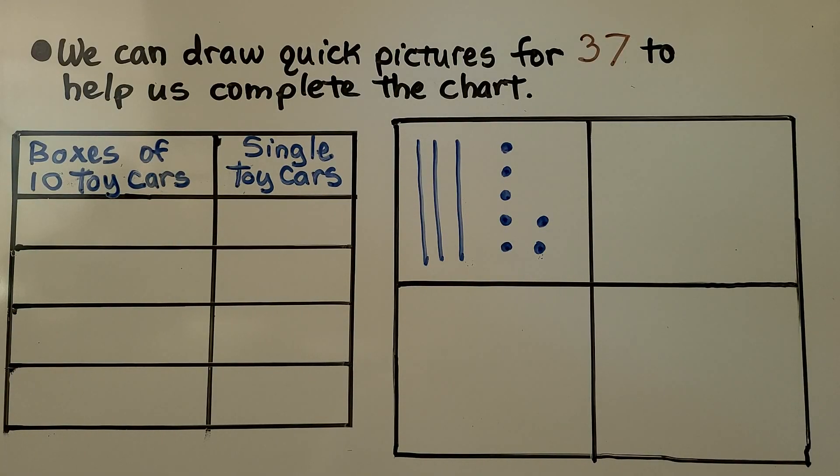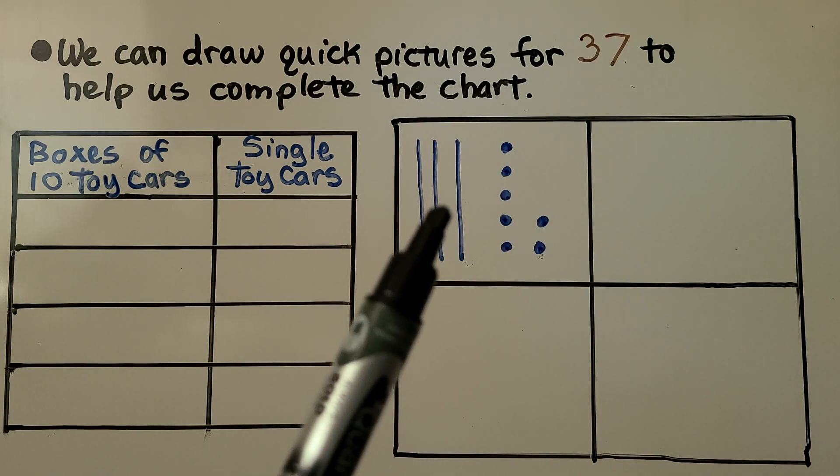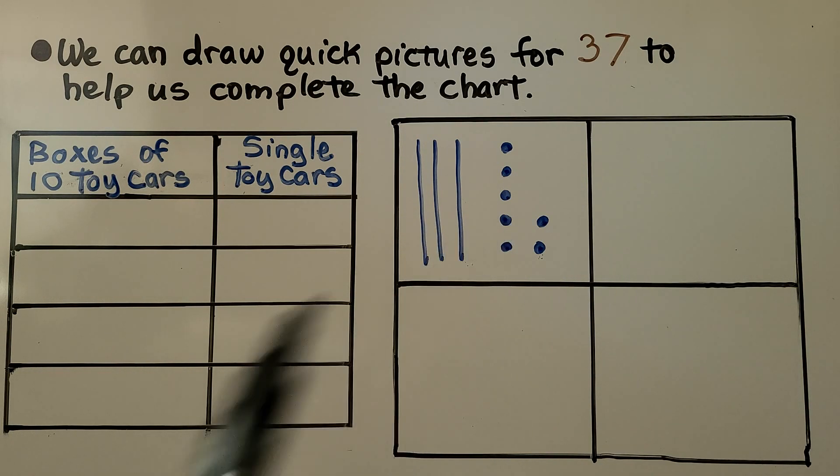We can make a chart. We can draw quick pictures for 37 to help us complete the chart. Right here we have boxes of 10 toy cars. So that's how many tens. And here we have single toy cars. That will be how many ones. And we can draw 37 as 3 tens and 7 ones.